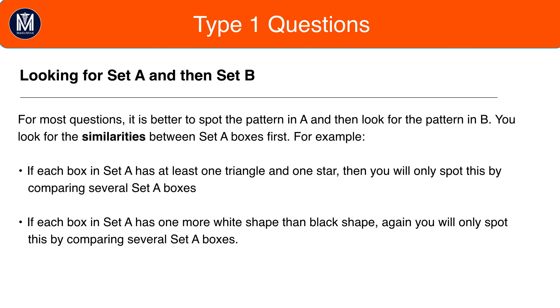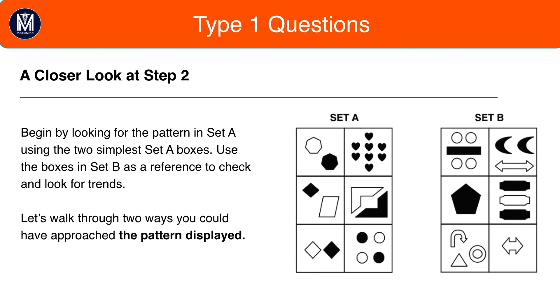Looking back at the question quickly, when you see one shape in a box, for example, we see that in Set B in the middle left box, you should be on alert for an odd versus even pattern and this is the box you should fixate on first.